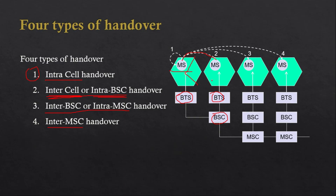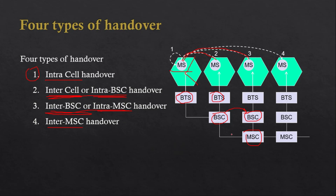In the third case, inter-BSC or intra-MSC handover, the user moves from one cell to another and the BSC also changes — moving from one BSC to another — but the MSC does not change. That is why it is called intra-MSC: the handover is between BSCs but within the same MSC.